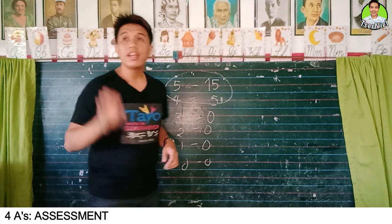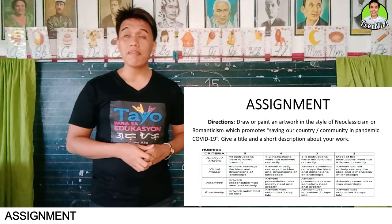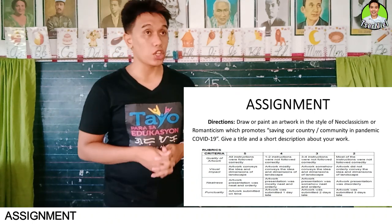Now for your assignment: you have to draw or paint an artwork in the style of Neoclassicism which promotes saving our country or community during the COVID-19 pandemic. You have to pick which among those two topics you will consider. You have to give a title and a short description about your work, done on a 1/8 illustration board. I also want you to examine this rubric since I will use it to give proper scores to your assignment. Copy this assignment in your notebook.